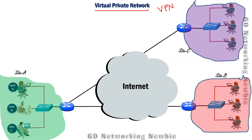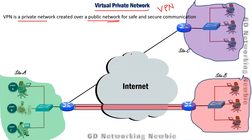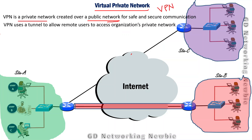The solution to this is VPN, or virtual private network. A virtual private network provides a tunnel — it is a private network created over a public network like the internet. In this private network we can have safe and secure communication. Using VPN, site A and site B can have a private tunnel between them, as shown here.